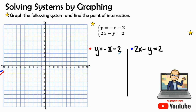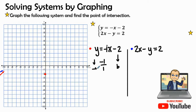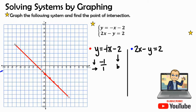For y equals negative x minus two, the negative two is already our y-intercept, so we start at negative two on the y-axis. Our slope is a negative one over one — there's no visible coefficient, so it's really negative one — meaning we go down one and over to the right one. Down one over one, down one over one; let's plot the red line and extend it as far as we can on the graph to make sure we don't miss any point of intersection.